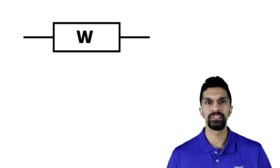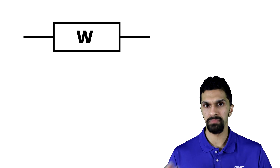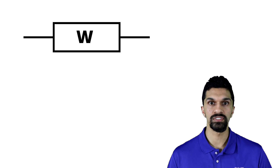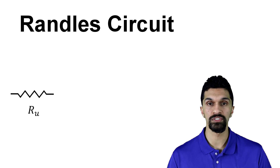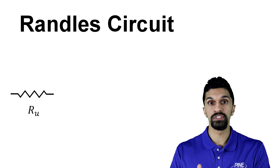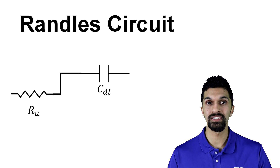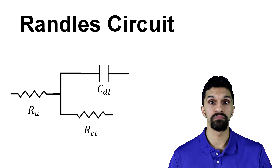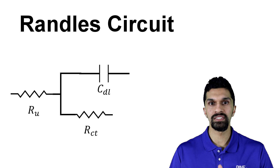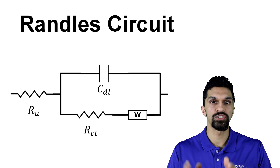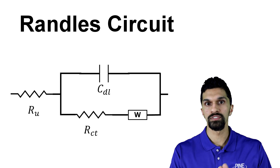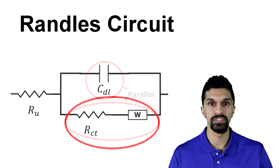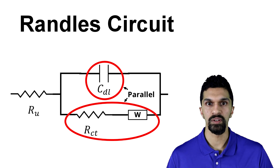The Warburg circuit element is usually not used by itself. It is incorporated into something like a Randles circuit, which consists of the solution resistance — a series resistor RU — in series with the electrical double layer capacitance CDL and the charge transfer resistance, both in parallel. The Warburg circuit element is then in series with the charge transfer resistance, so you'll have RCT in series with W, and both of these are parallel with the electrical double layer capacitance.